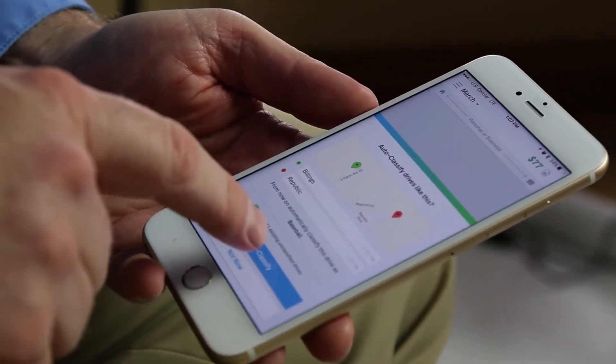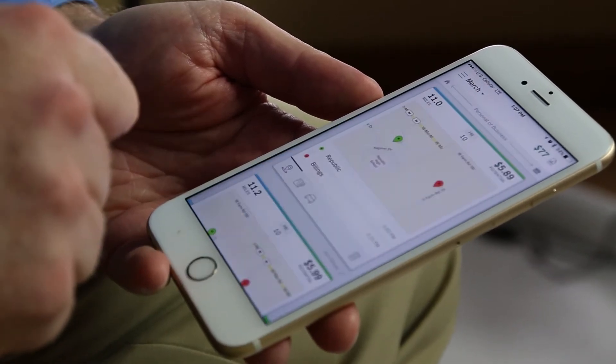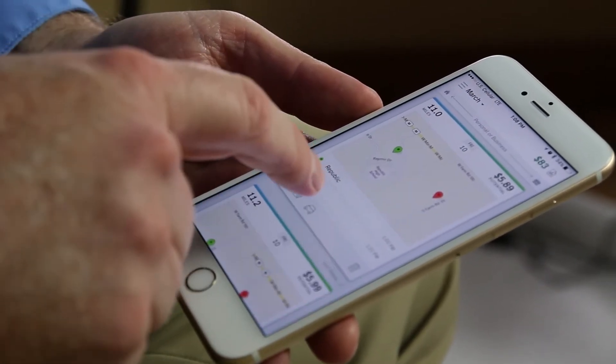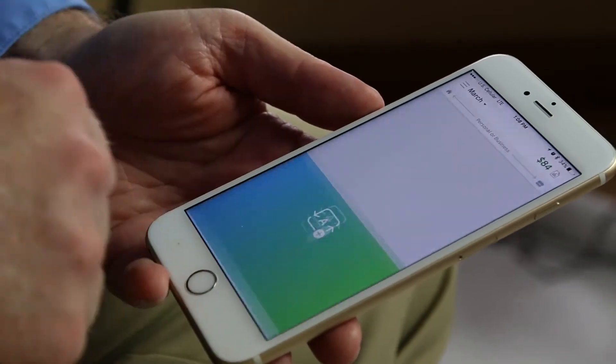It classifies the drive, and then it lets you get in. And just with an easy swipe, you can swipe right if you want to classify it as business or swipe left if you want to classify it as a personal drive.